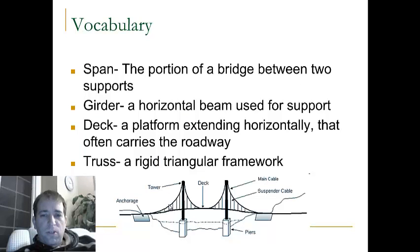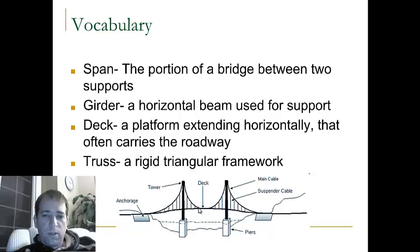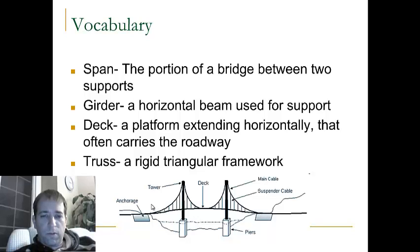Some other vocabulary that has to do with the bridge is the span. The span is the portion of the bridge between two supports — for example, from this support to this support, the in-between part is the span. The girders are the horizontal beams that are used for support, so this line going right across. The deck is the platform that often carries the road, so from this point to this point. And the trusses are triangular framework, just like you have right here in this picture.